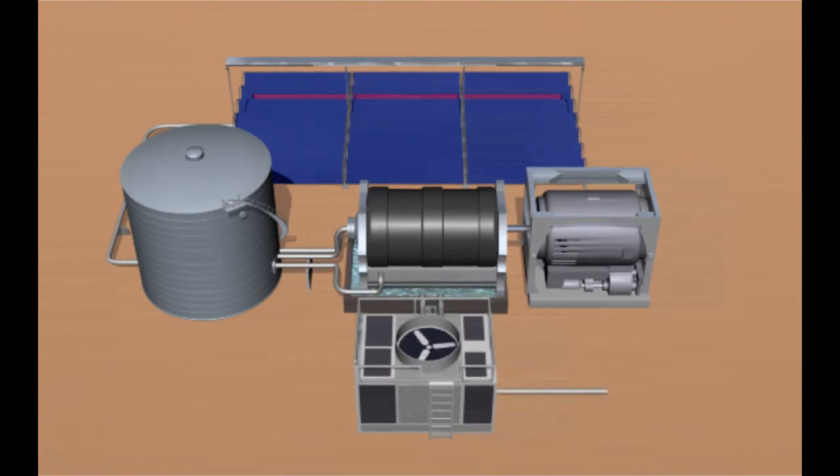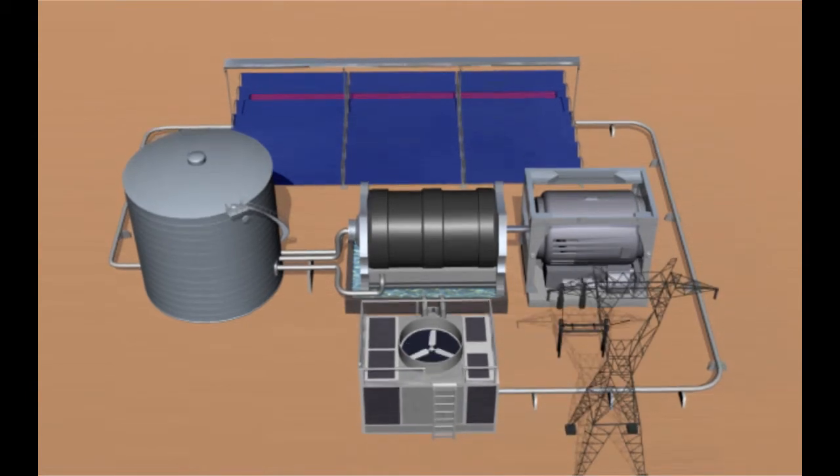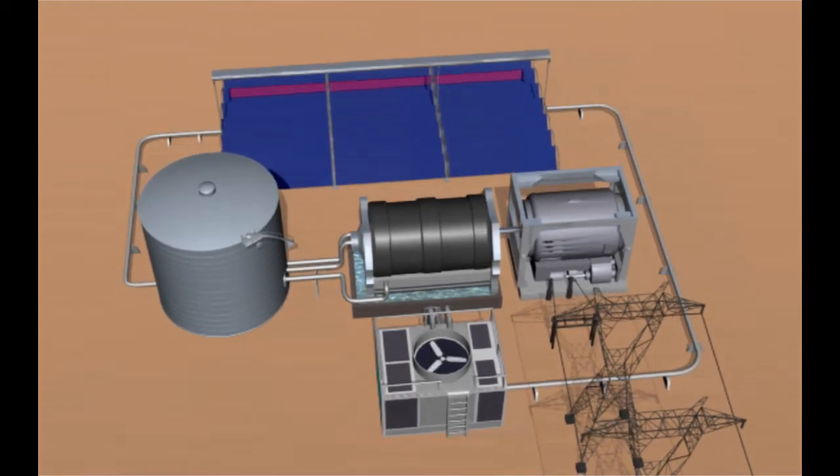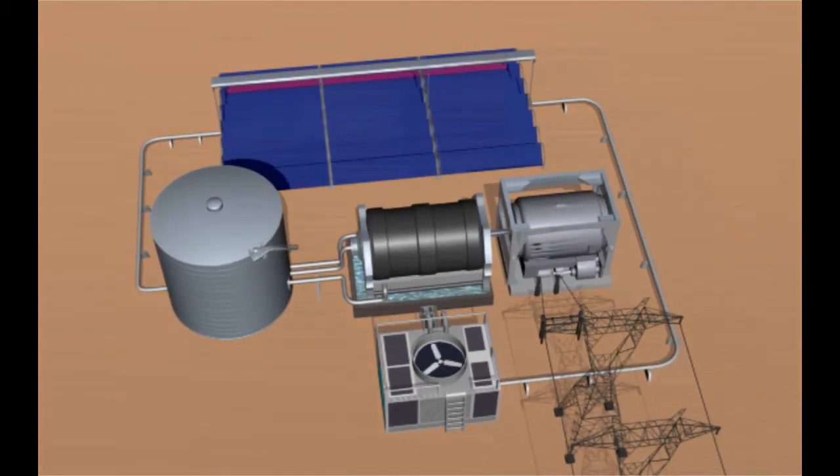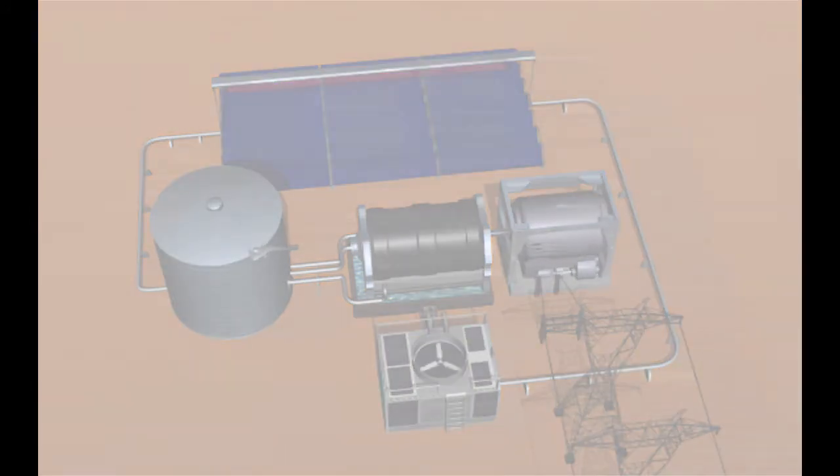Steam cools to water after passing through the turbines and is recirculated to repeat the process. Electric power is transmitted to consumers through the public utility grid.